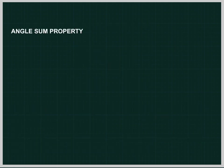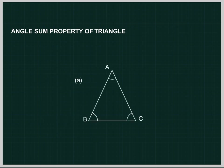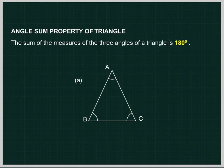Angle Sum Property of a Triangle. The sum of the measures of the three angles of a triangle is 180 degrees. In triangle ABC, angle A plus angle B plus angle C equals 180 degrees.